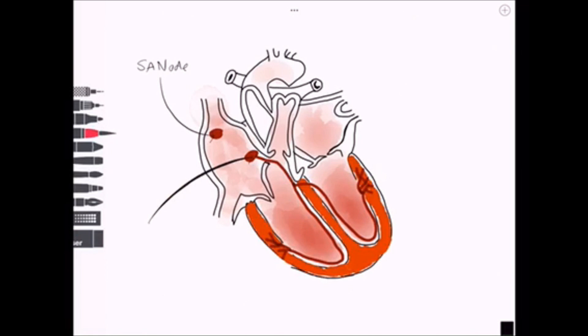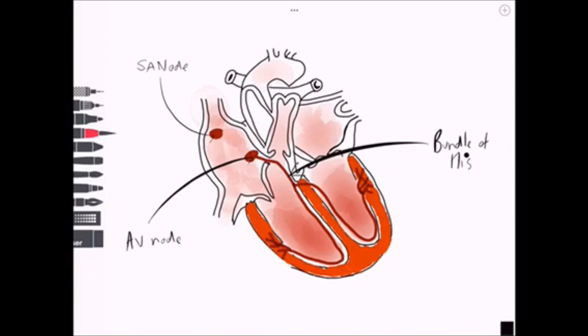From the SA node, conduction spreads to the AV node where we get atrial contraction. The AV node is located just above the tricuspid valve in the interatrial wall.